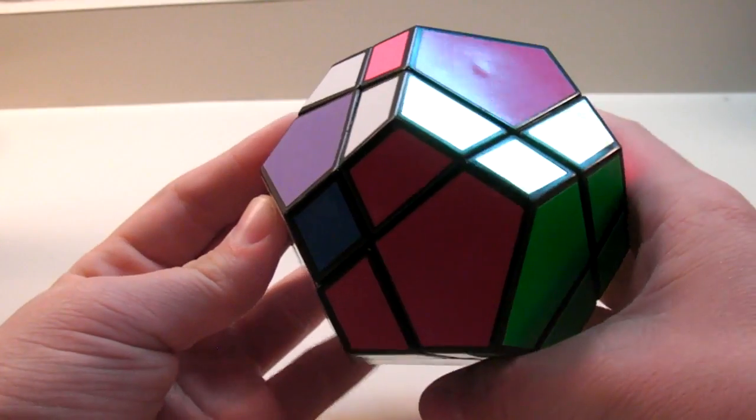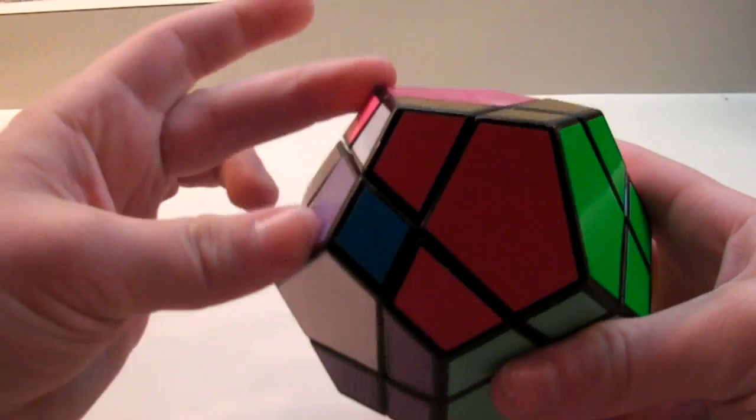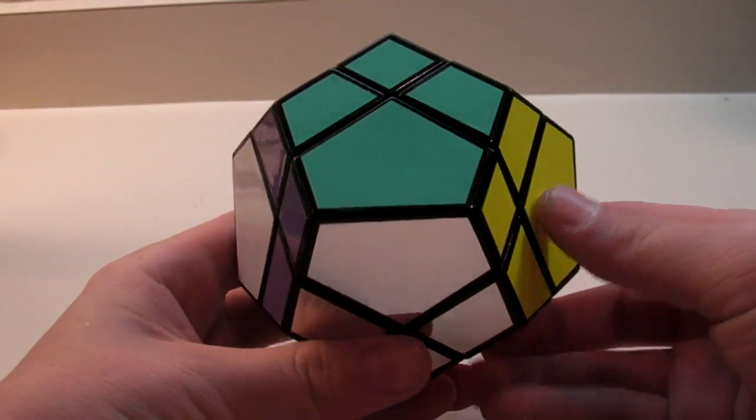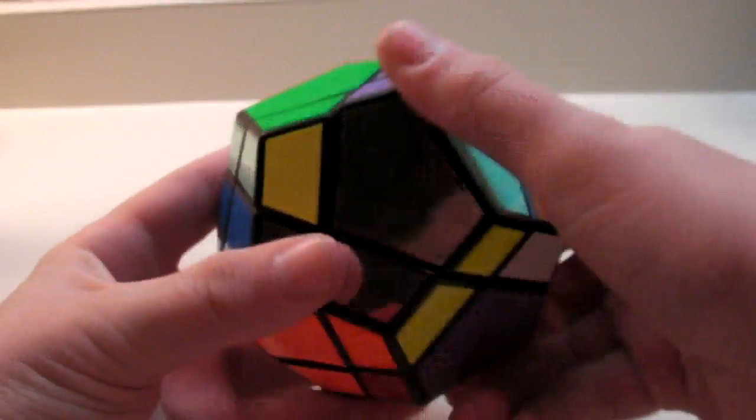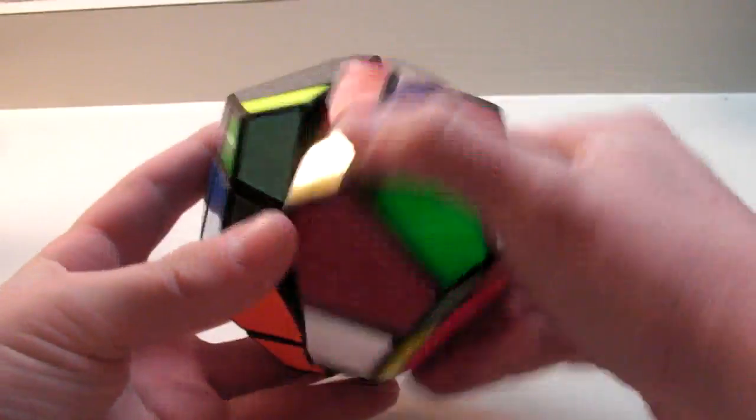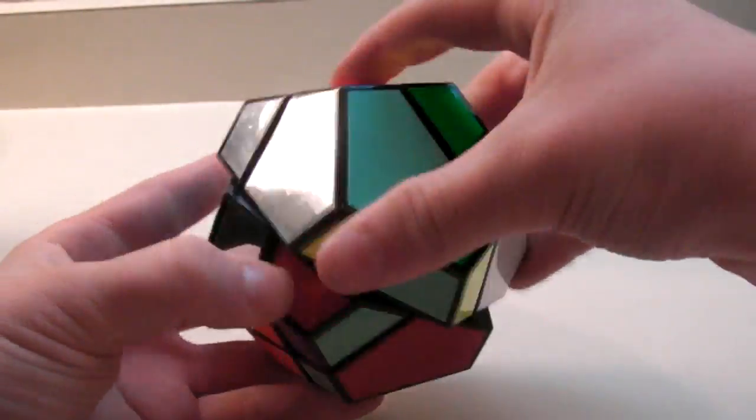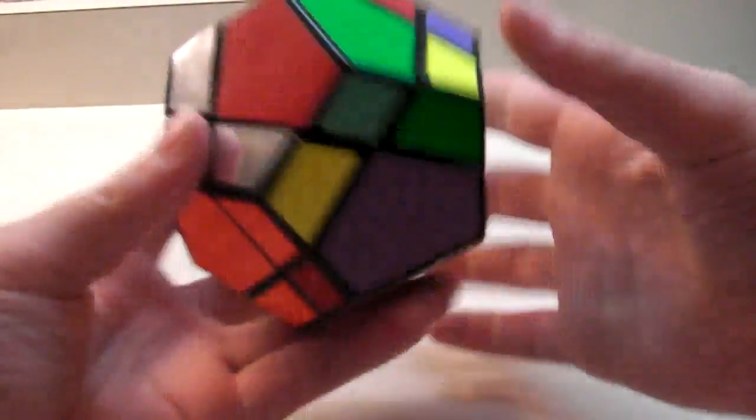So if you have two adjacent like this, you want to hold them on the left and back and perform the algorithm six times. Two, three, four, five, six.